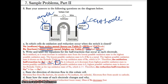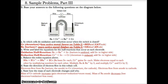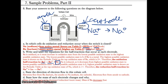Since barium is the anode and sodium is the cathode, electrons will flow from the barium anode to the sodium cathode — electrons always, always flow from the anode to the cathode.